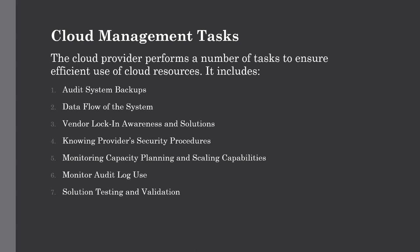The cloud provider performs a number of tasks to ensure the efficient use of cloud resources. The first one is audit system backups. It is required to audit the backups timely to ensure restoring of randomly selected files from different users. Backup can be performed in two major ways: backing of files by the company from on-site computers to the disk that resides within the cloud, and backing of files by the cloud provider. It is necessary to know if the cloud provider has encrypted the data, who has access to that data, and if the backup is taken at different locations, the user must know the details of those locations.